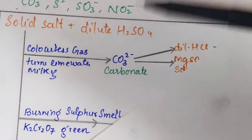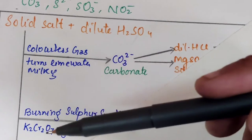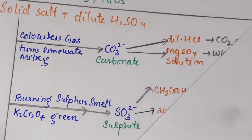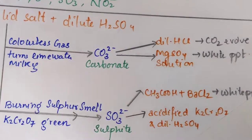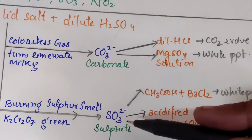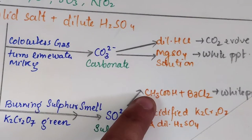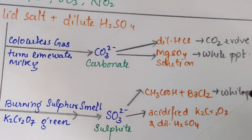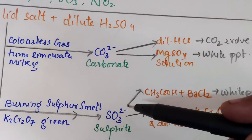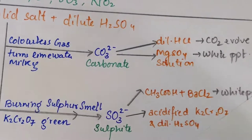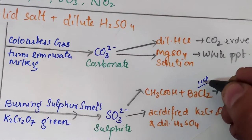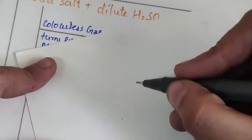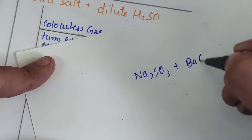The second observation: take a solid salt and add dilute H₂SO₄. If a burning sulfur smell is obtained, and when these fumes are passed over a solution containing potassium dichromate it turns green, we infer the salt contains sulfite. The two confirmatory tests for sulfite are the BaCl₂ test and the potassium dichromate test. In the BaCl₂ test, take a salt solution, first add acetic acid, then add BaCl₂ — a white precipitate of BaSO₃ is formed.